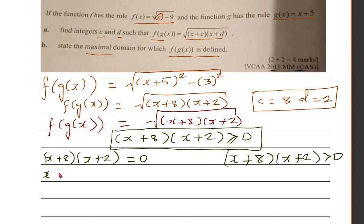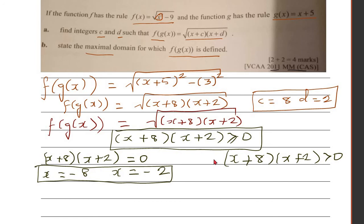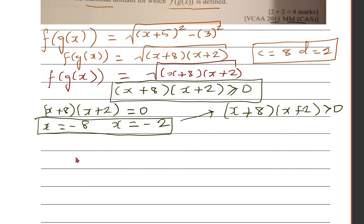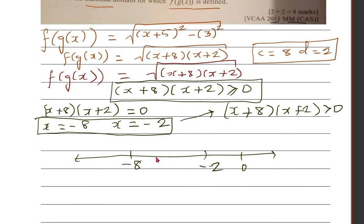Setting (x+8)(x+2) = 0 gives us x = -8 or x = -2. These two critical numbers are very important — they help us solve the inequality. Let's draw a number line with 0, -2, and -8 marked. We accept both -8 and -2 as valid values.